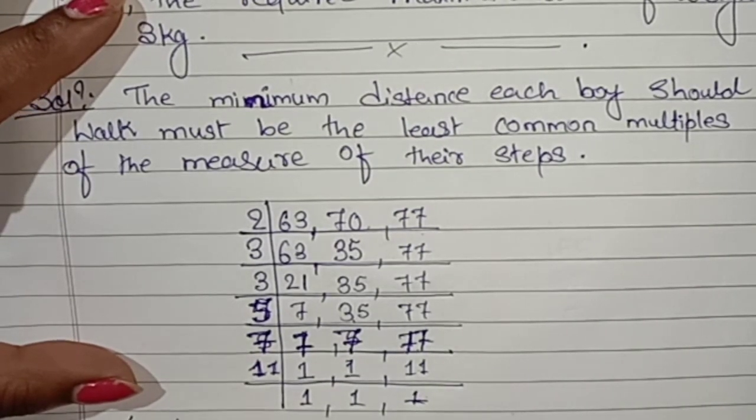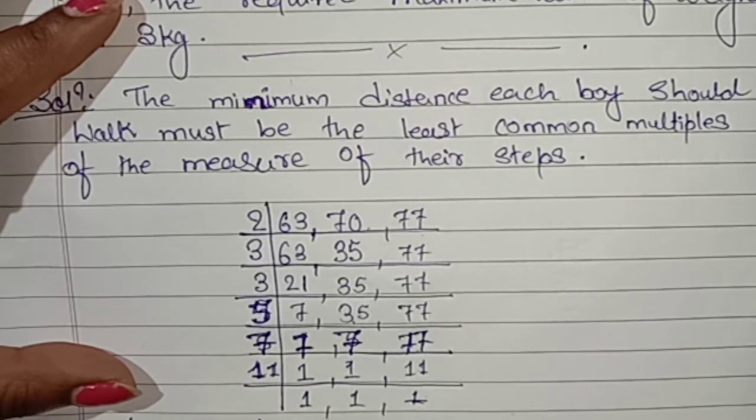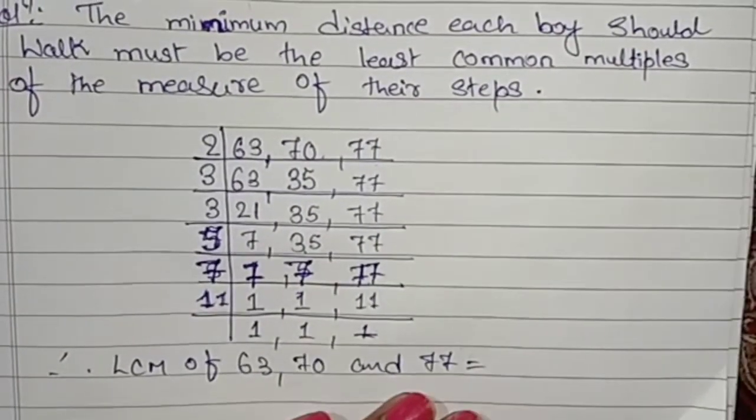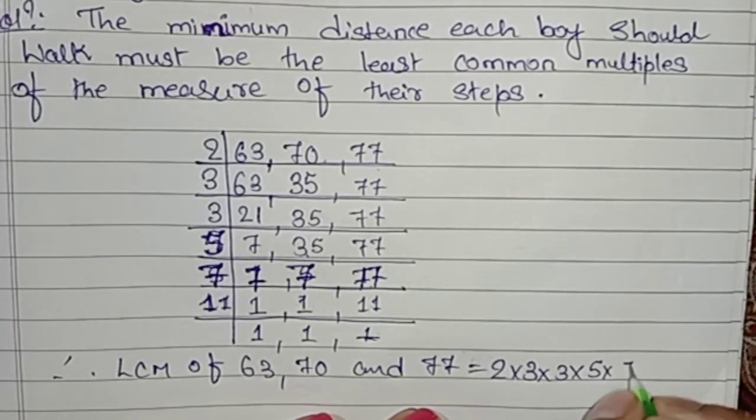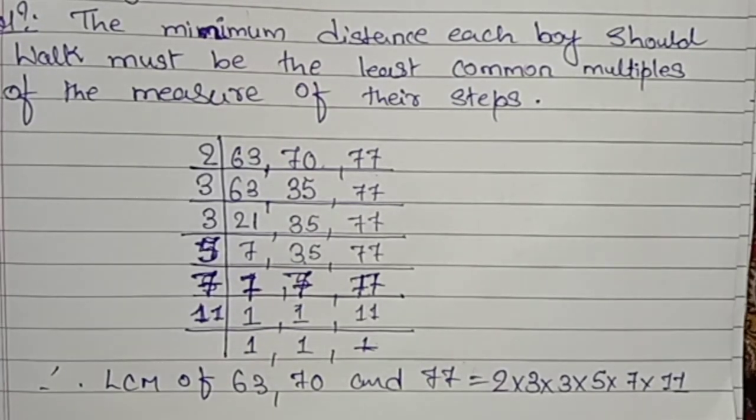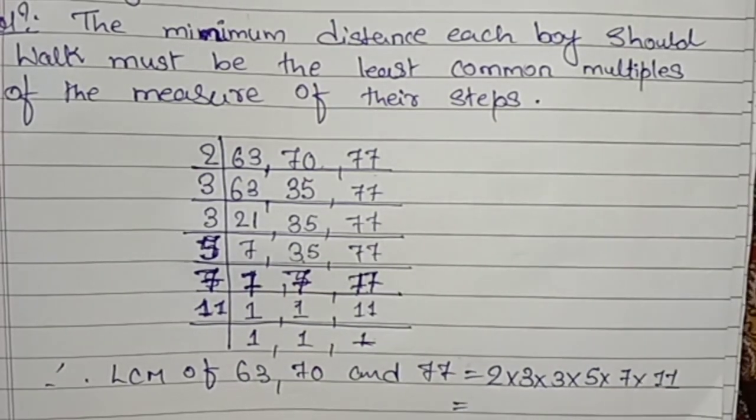Therefore, LCM of 63, 70 and 77 is equal to 2 into 3 into 3 into 5 into 7 into 11. As I said already, we have to take all the common and uncommon numbers, the factors.